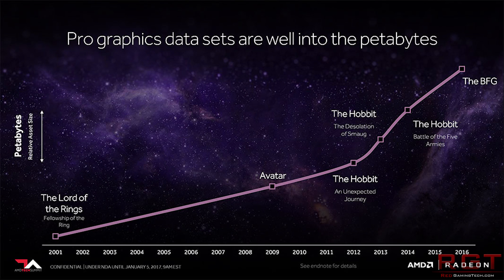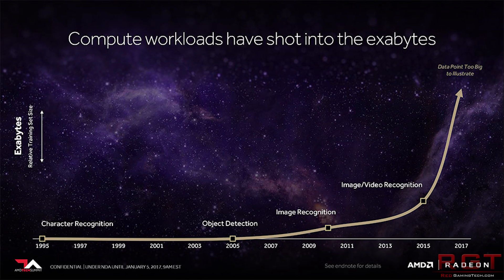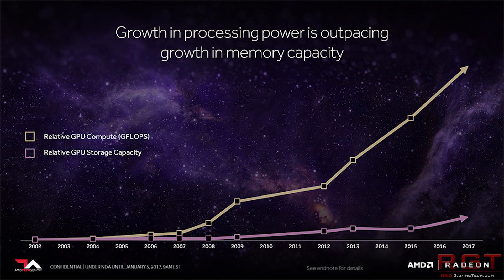What we do know about the graphics card is based upon another version of Radeon Vega — the MI25. That's Radeon Instinct, and that is for professional use. But still, the card does run at a clock speed of about 1.5 GHz. We know that because of the name and other leaks.